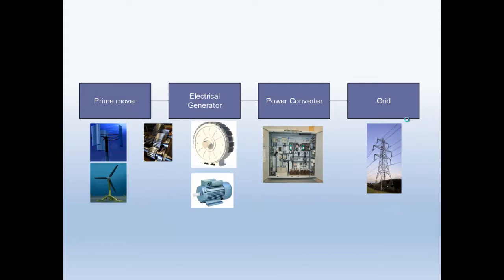You've seen this slide before. This is looking at the blocks within a renewable energy device. If you take the prime mover as the moving part that extracts your energy, the electrical generator then converts that from mechanical energy into electrical energy, and the power converter is needed to then convert the variable voltage and frequency from the electrical generator into a fixed voltage and frequency in order to connect to the electrical network, which is represented by the grid.